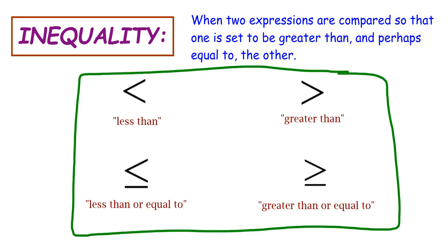There are many ways to remember which side represents the greater value. In elementary school, a common trick is to think of Pac-Man or an alligator, where the open side of the mouth points toward the greater number. However, when dealing with variables, that trick isn't as helpful. What's more important is reading inequalities from left to right, the same way we read other expressions — x plus 7 is read left to right as x plus 7.